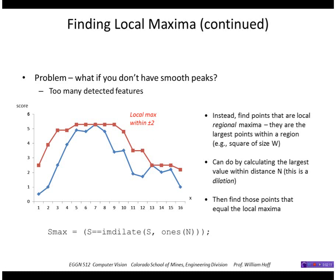In MATLAB, that's fairly easy to do using the imdilate function. We've seen this function for binary images. It also works for grayscale images. But instead of just simply dilating a region, it returns the local maximum.